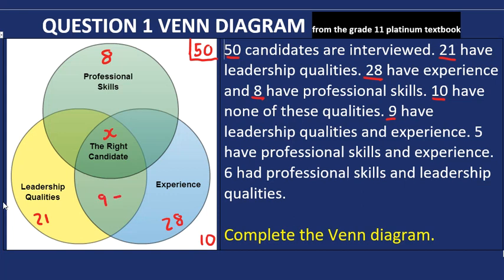We know that 21 have leadership qualities, 28 have experience, 8 have professional skills, and 10 candidates have none of these qualities — so they go outside the circles. Nine candidates have leadership qualities and experience, so that region is 9 minus X. Five have professional skills and experience, so that's 5 minus X. Six have professional skills and leadership qualities, so that's 6 minus X.